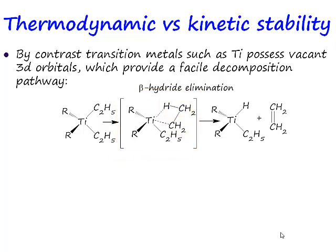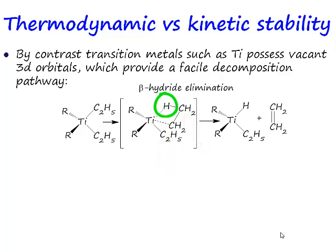What you have, if you have a CH₃, is what we call a beta hydrogen. This is the alpha carbon, this is the beta carbon, and this is a hydrogen bonded to the beta carbon. This hydrogen bonded to a beta carbon can interact with a transition metal centre.